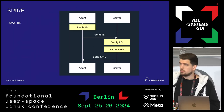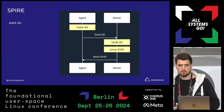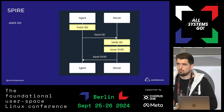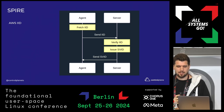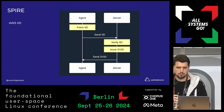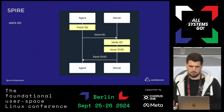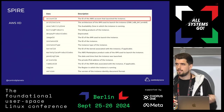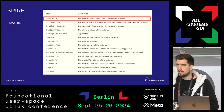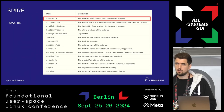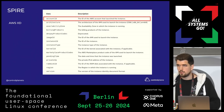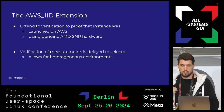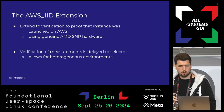This is already built into SPIRE: the agent fetches this identity document, sends it to the server, and the server verifies the signature and can also call the AWS API to confirm the machine actually exists in the correct account. If everything checks out, the token is issued and the agent joins the network. We can then make assertions like 'only agents from a certain account ID or from a certain zone are allowed to join.'